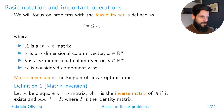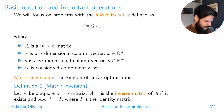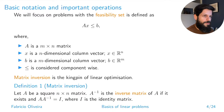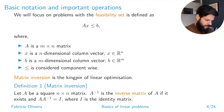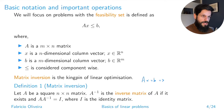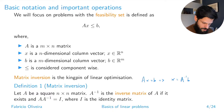Matrix inversion is basically central in linear programming — it's the kingpin. If you remove it, everything else falls apart. The reason is that linear programming methods are based on systematically solving linear systems over and over again. Given a system of equations Ax = b, if matrix A is invertible, this can be solved by pre-multiplying both sides with the inverse of A.